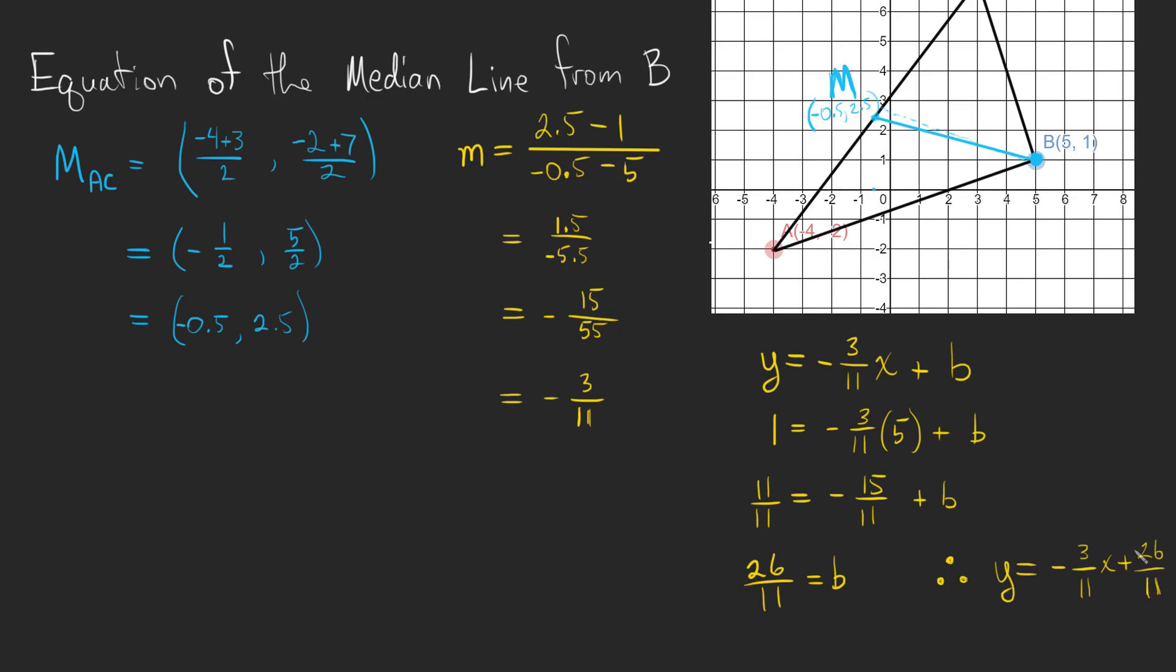So my equation of the median line is negative 3 elevenths x plus 26 over 11. 26 over 11, like I said, that's 2.36. 2.36 is roughly what I see on my graph. So this looks like we're pretty darn close to where this is supposed to be. My slope is negative, so that's correct. And away we go.